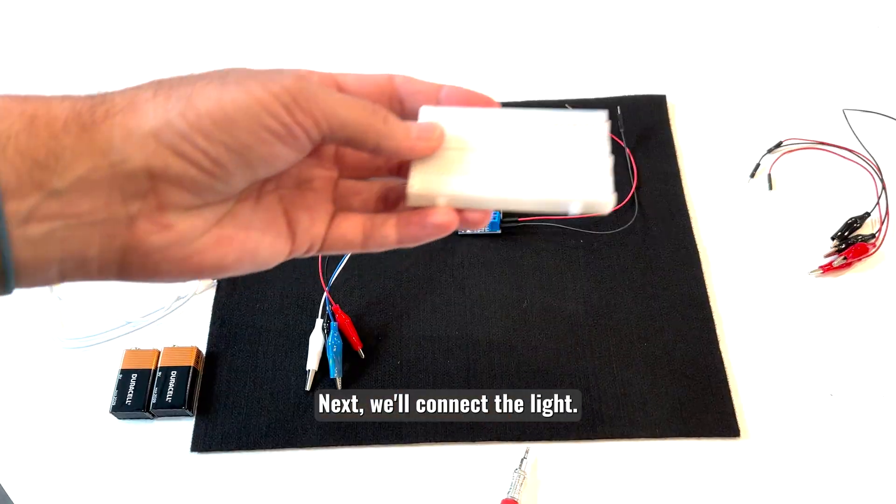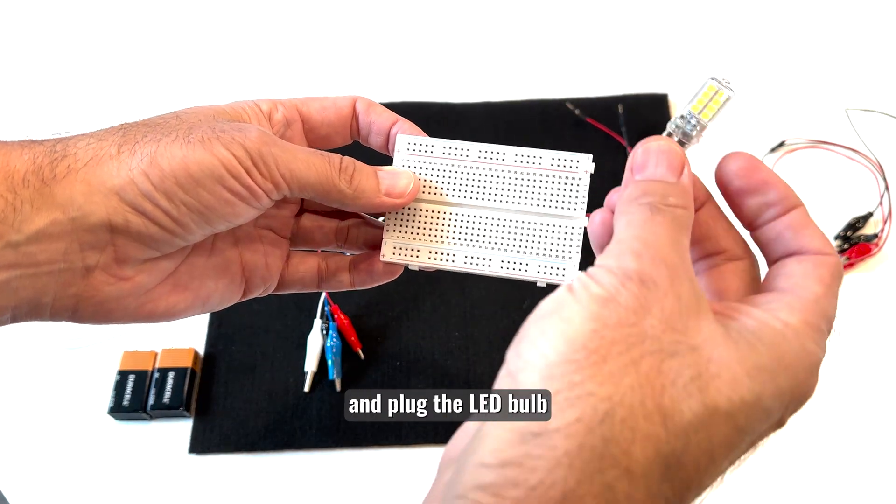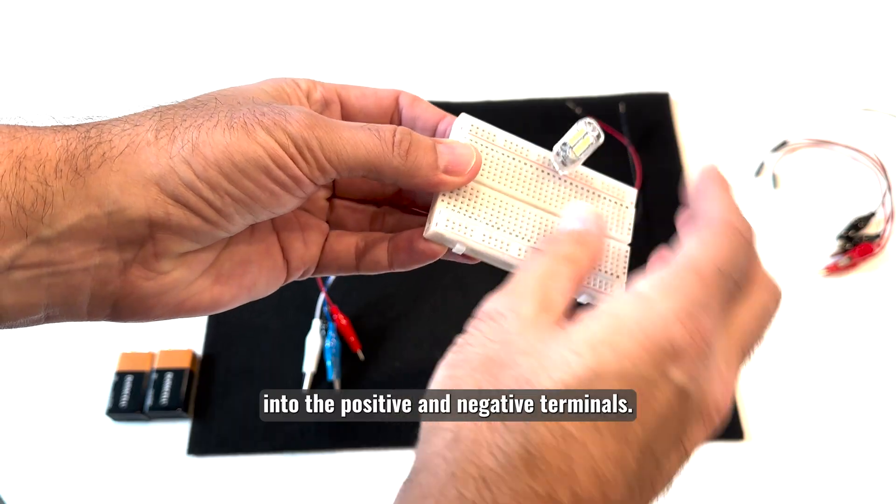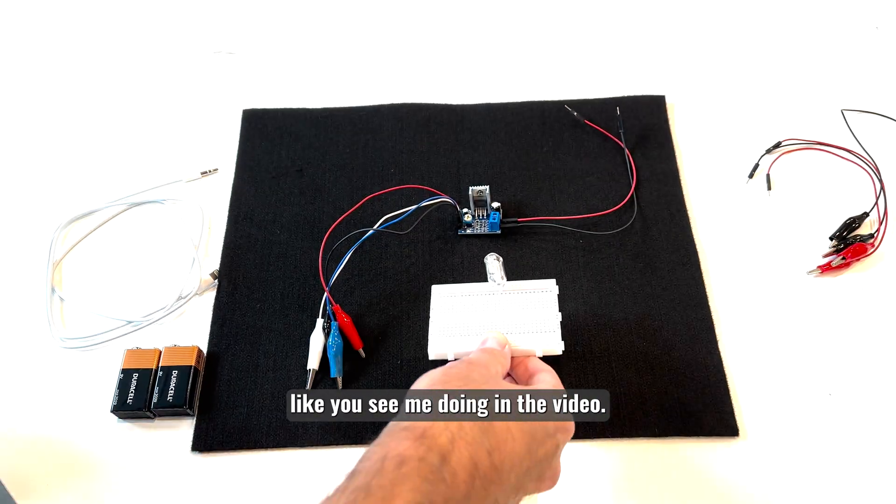Next, we'll connect the light. Take your breadboard and plug the LED bulb into the positive and negative terminals, on the labeled region on the breadboard like you see me doing in the video.